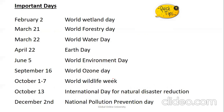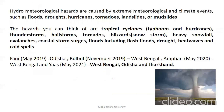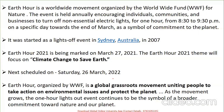Hydrometeorological hazards are caused by extreme meteorological and climate events in the form of floods, droughts, hurricanes, tornadoes, landslides, mudslides, typhoons, heavy snowfall, avalanches, and flash floods. Recent notable cyclones include Fani (May 2019), Bulbul (November 2019 in West Bengal), Amphan (West Bengal), and Yaas (West Bengal, Odisha, and Jharkhand).